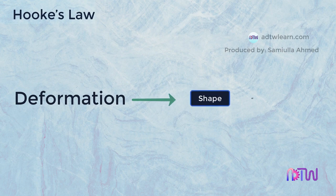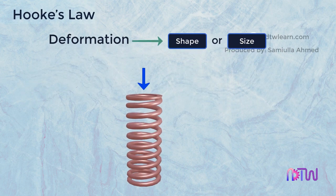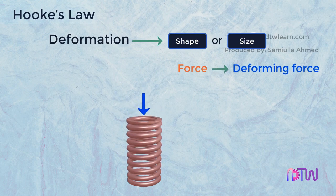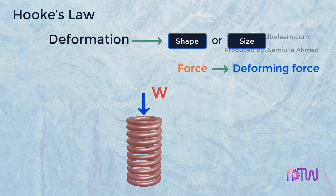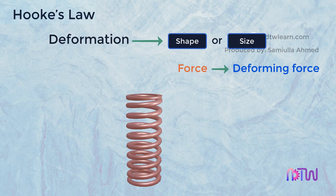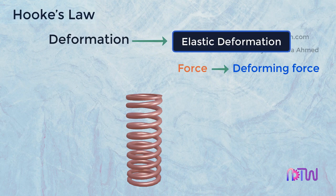Deformation means to change the shape or size of a body. The force which makes the body deform is called the deforming force. When the body is deformed temporarily — such as in the case of loading with a load W, which after removing causes the spring to come back to its original shape and size — this is called elastic deformation.